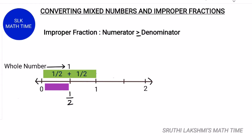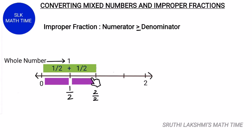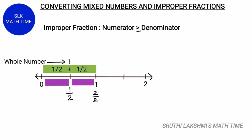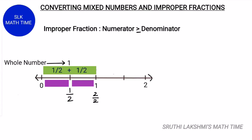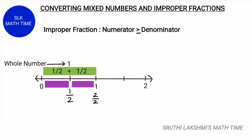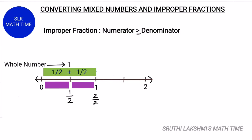We again add a half to the 1 half we already have, and we would get two halves. One is nothing but 2 by 2. What is a whole fraction? A whole fraction is any fraction that has the same number on the numerator and the denominator. For example, 3 by 3 and 56 by 56 are whole fractions.